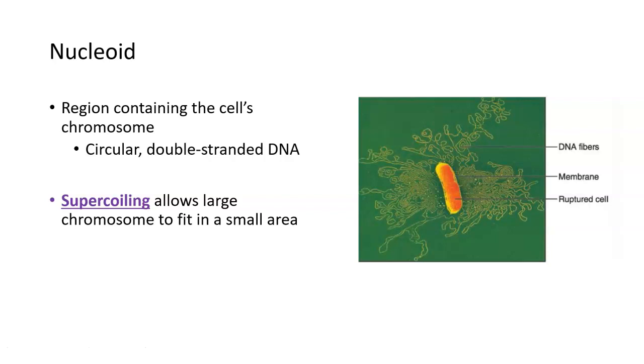The nucleoid is the region inside of a bacterial cell where the DNA is contained and organized. The reason we can't call it a nucleus is because technically the DNA is not wrapped within a membrane as it would be in a eukaryotic cell. Bacteria have circular double-stranded DNA as their chromosome. You can actually see bacterial chromosome leaking out of this bacterial cell here, and all of that DNA has to fit into this area.